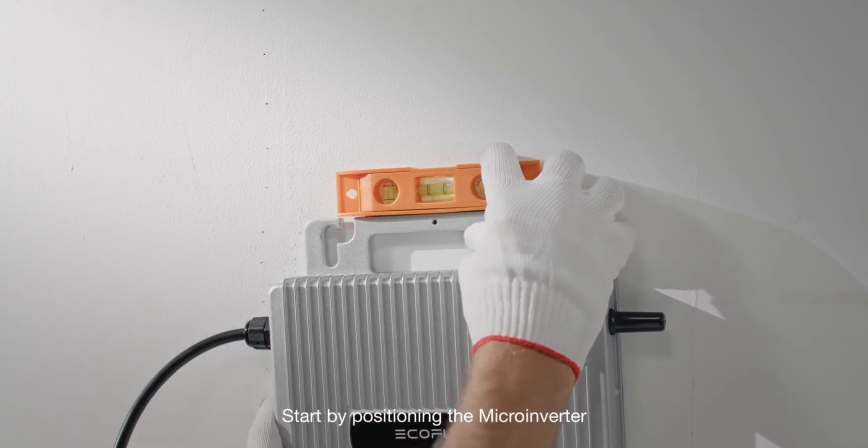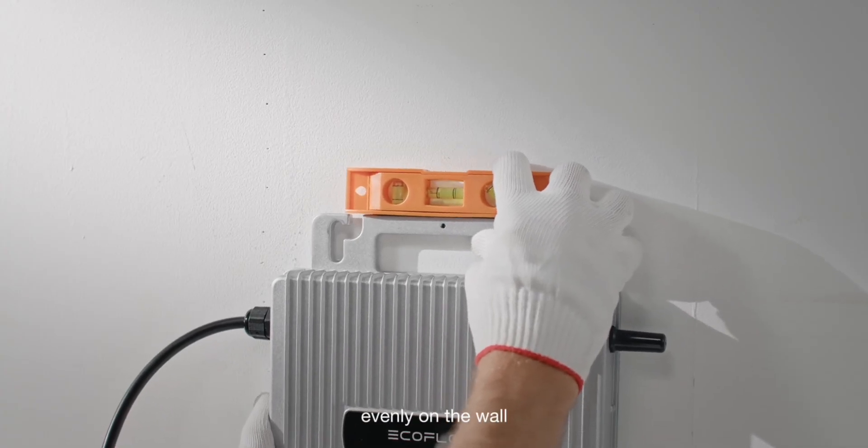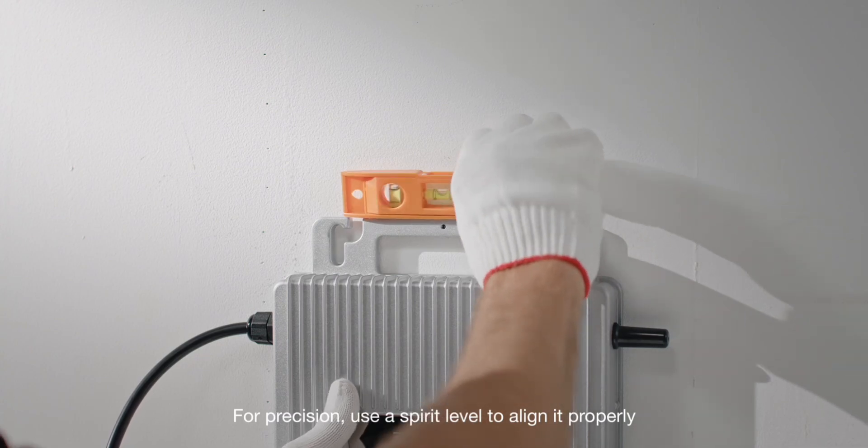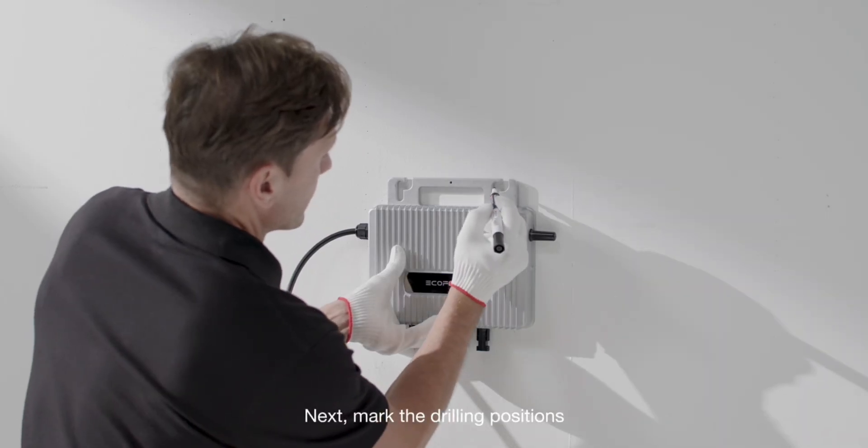Start by positioning the microinverter evenly on the wall. For precision, use a spirit level to align it properly. Next, mark the drilling positions.